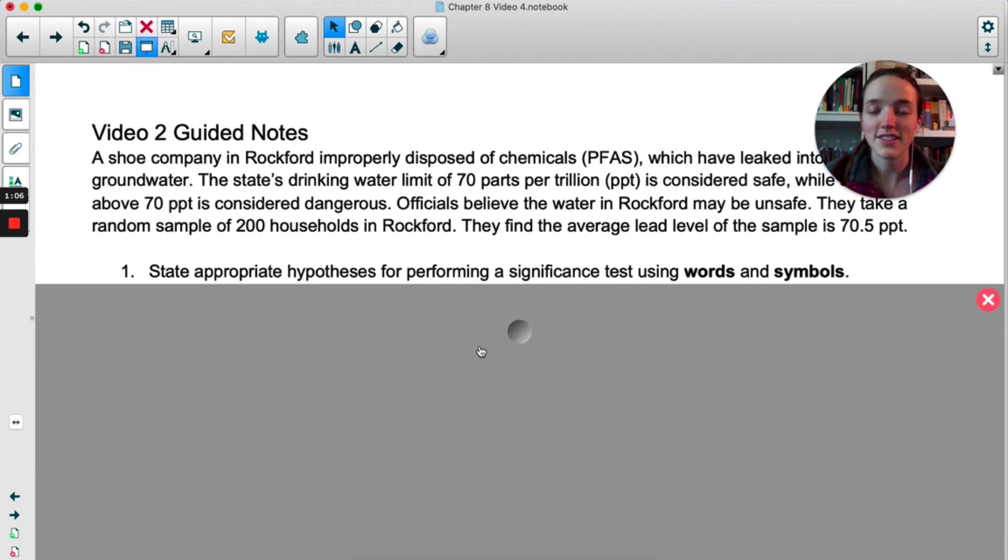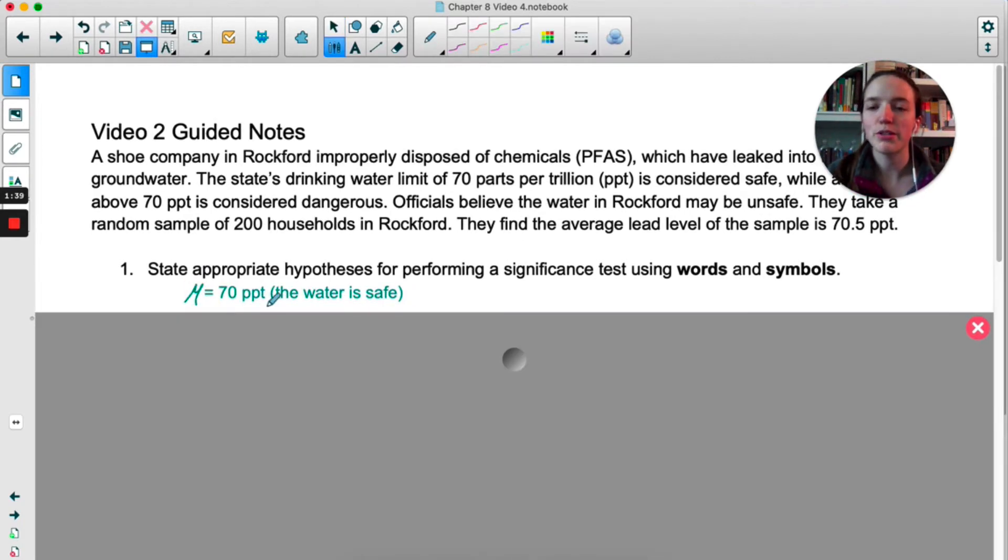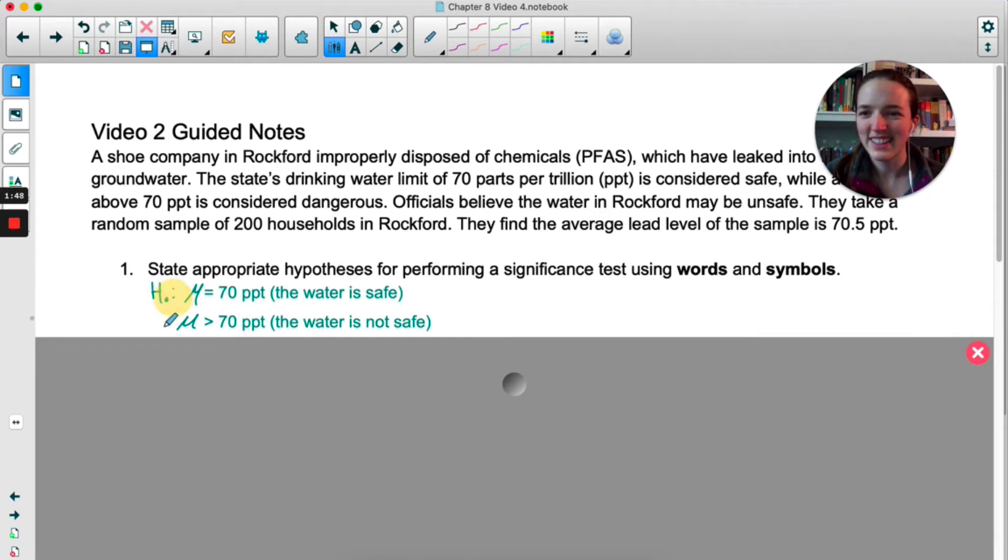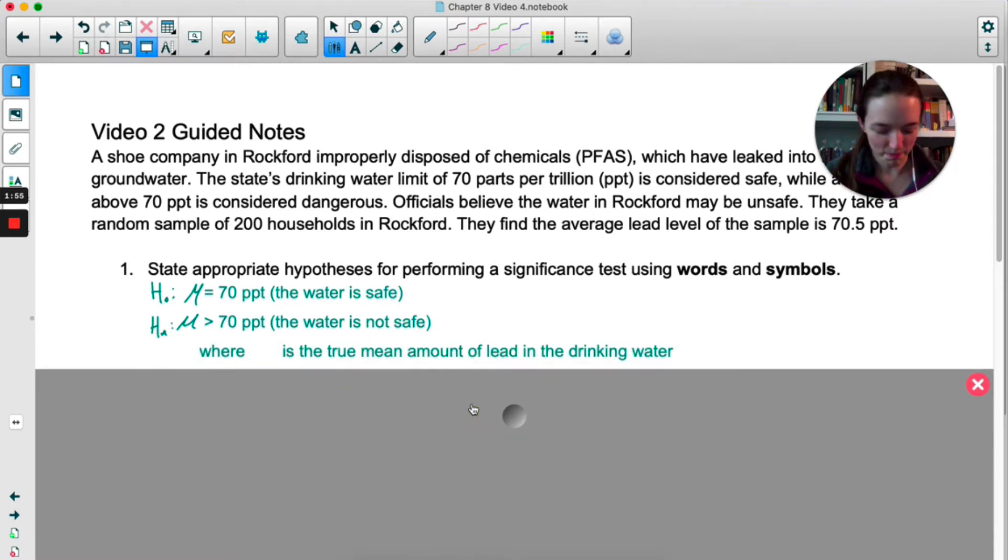So we'll start with our null hypothesis. That's the status quo or the thing that we think is already true. In this case that would be that the water is safe. So mu equals 70, that would be the water is safe, and then our alternate would be mu is greater than 70. Null and alternate. I also need to clarify what I'm talking about here. So where mu is the true mean amount of lead in the drinking water. So there's our null and there's our alternate in words and symbols.